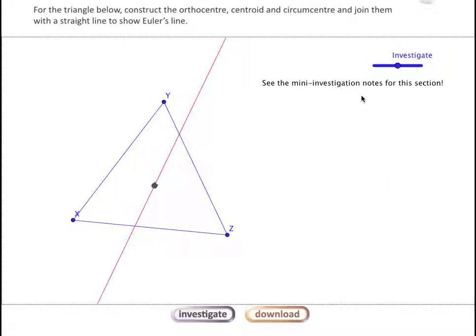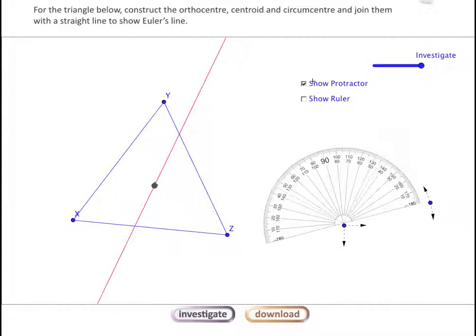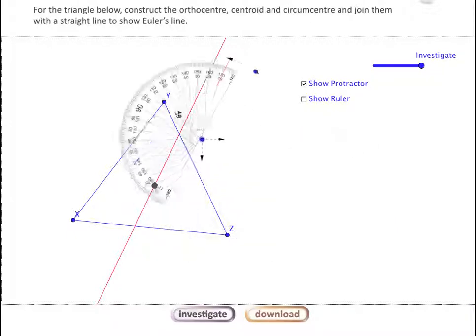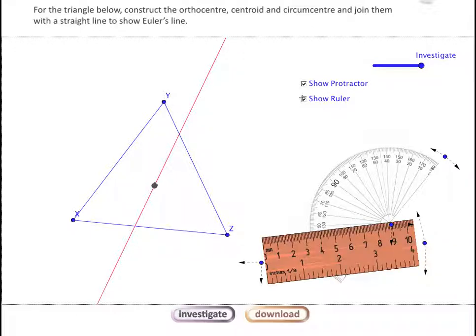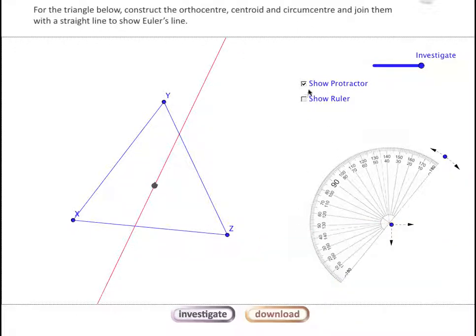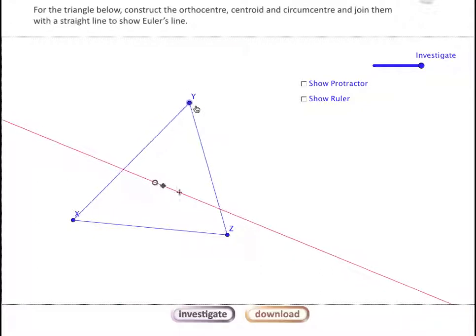To check our potential hunches about what's going on there, we've got a couple of tools we can use here. We've got a protractor that could be used to measure the angles of these triangles, and we've also got a ruler that could be used to measure the side length. If we had any hunches as to what's going on there, then those tools could be useful.